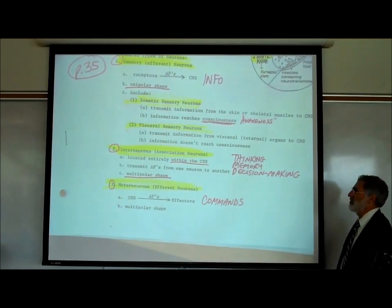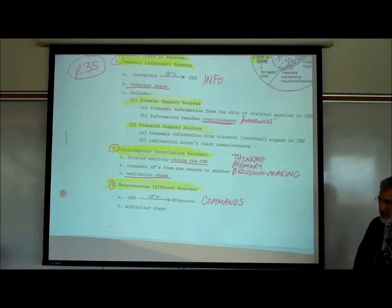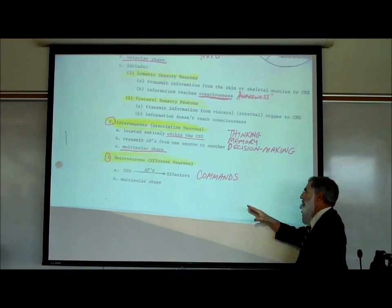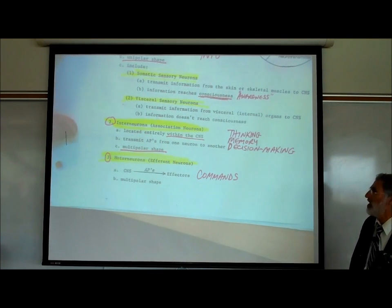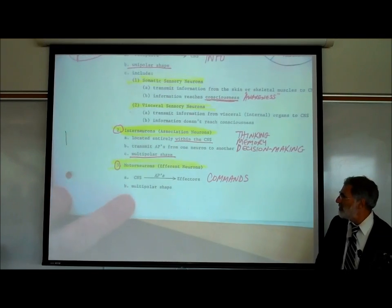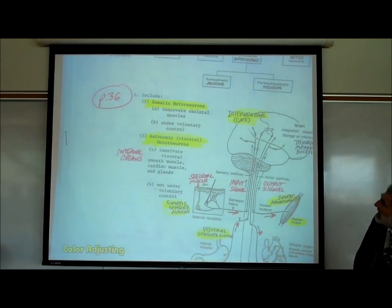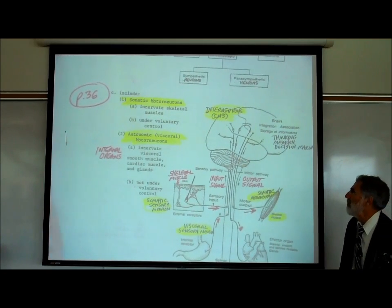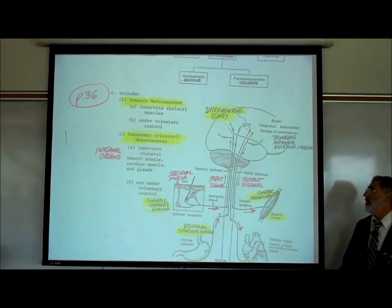Interneurons are found entirely within the central nervous system, used for thinking, memory, and decision-making, and they commonly have a multipolar shape. Motor or efferent neurons conduct action potentials from the central nervous system to the effector organs — skeletal muscles, heart, stomach, sweat glands, and salivary glands — sending commands and causing an effect. They always have a multipolar shape. There are two types: somatic motor neurons and autonomic motor neurons.